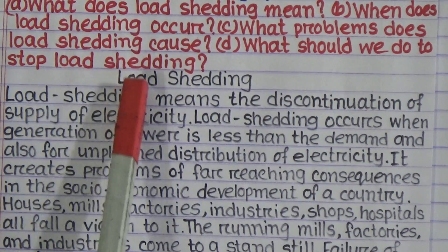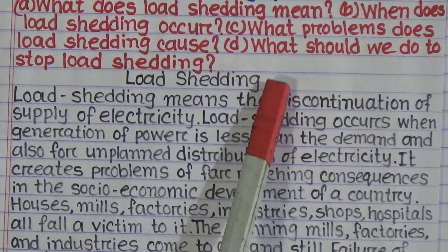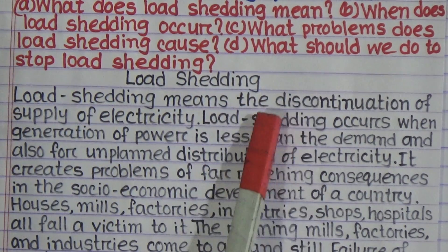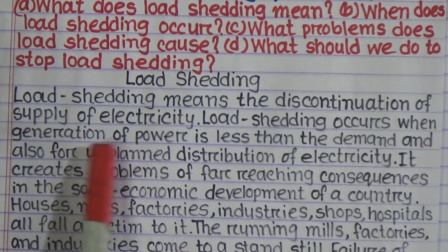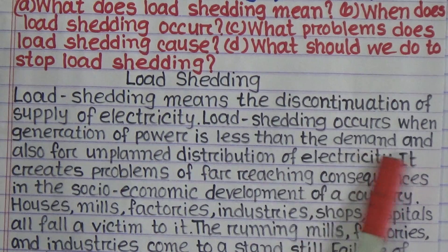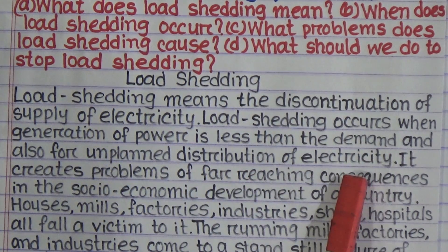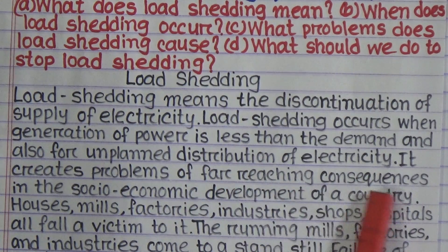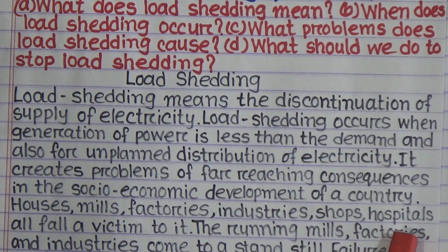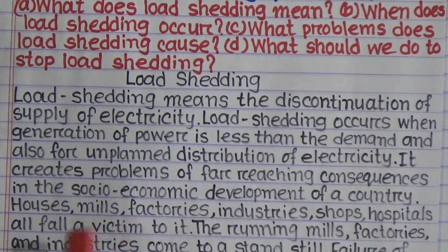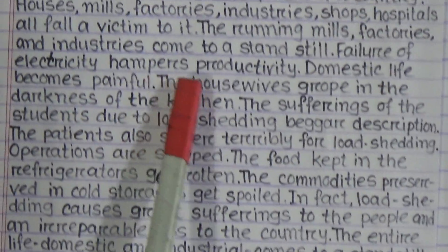You have to give a suitable title, so here I have written 'Load Shedding' as the title. Load shedding means the discontinuation of supply of electricity. Load shedding occurs when generation of power is less than the demand, and also for unplanned distribution of electricity. It creates problems of far-reaching consequences in the socio-economic development of our country. Houses, mills, factories, industries, shops, and hospitals all fall victim to it. The running mills, factories, and industries come to a standstill, and failure of electricity hampers productivity.